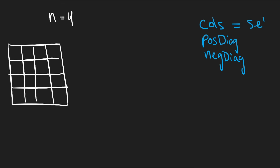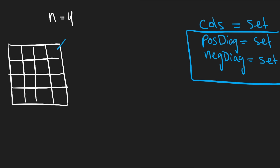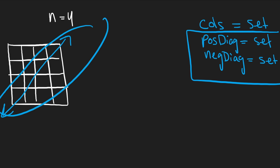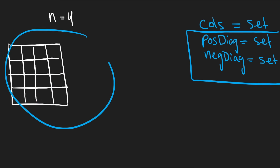We can keep track of all of these with sets. A hash set can tell us which columns — 0, 1, 2, or 3 — have already had a queen placed. We can do the same for positive diagonals and negative diagonals. But you're probably wondering: how can we easily index positive and negative diagonals? We don't have obvious indices for them — so I'll show you a pattern.